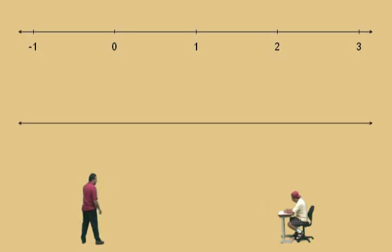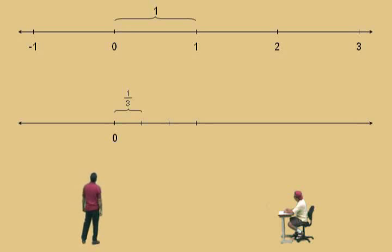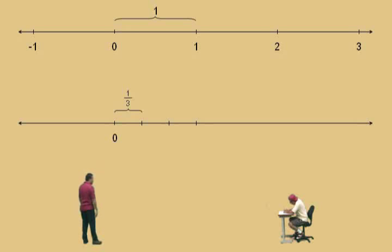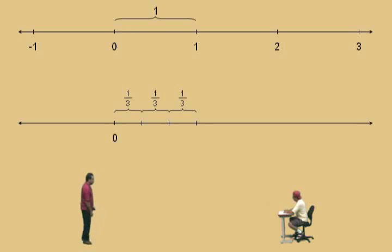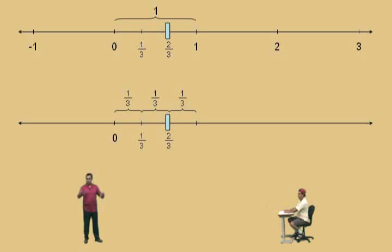There are our number lines. This time we're going to take a one and break it up into three pieces — divide it by three. So here we have one divided by three, which we say is one-third. How many thirds does it take to make up a one? Three of them. Let's do addition on the number line with fractions. One-third plus another third is two-thirds — it's like one apple plus another apple is two apples, except we're dealing with thirds.